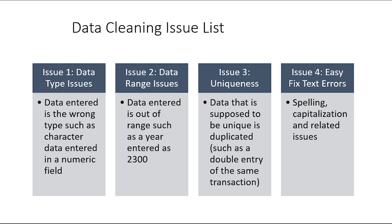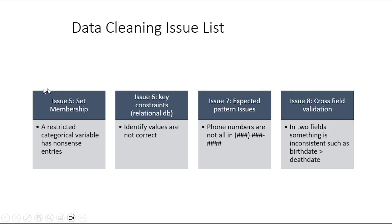These are fairly easy to fix if you just convert everything to all caps or a consistent format. Issue five is set membership — for example, if I asked what college year you were, you should be freshman, sophomore, junior, or senior; you shouldn't write in 'second year.' Set membership refers to restricted categorical options. Issue six is key constraints, which relates to relational databases and unique keys for records in relational databases.